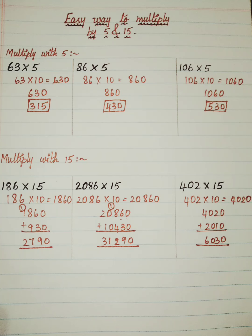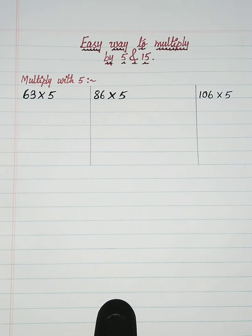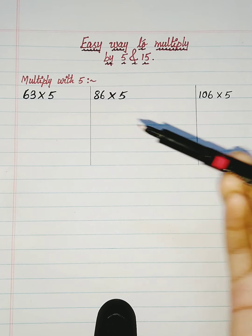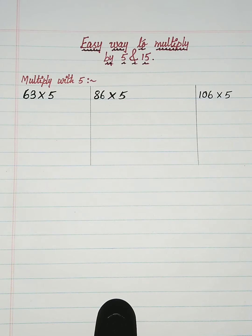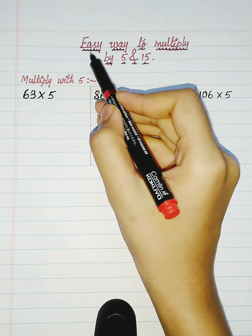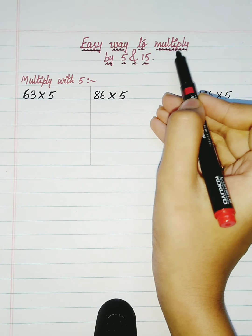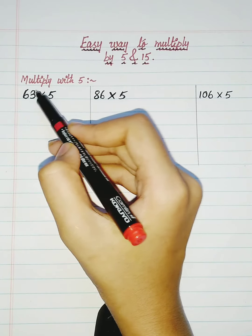Hi guys, welcome back to Creative Kids YouTube channel. In today's video we are going to see a simple trick to multiply with 5 and 15. This trick will be more helpful for kids in competitive exams or any exams, to get the result more faster. Easy way to multiply by 5 and 15 — first one: multiplication with 5.